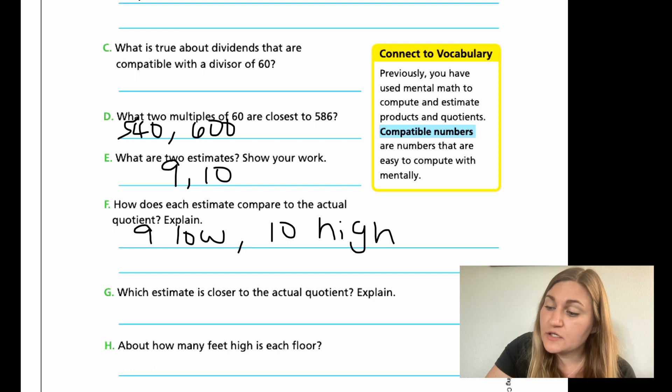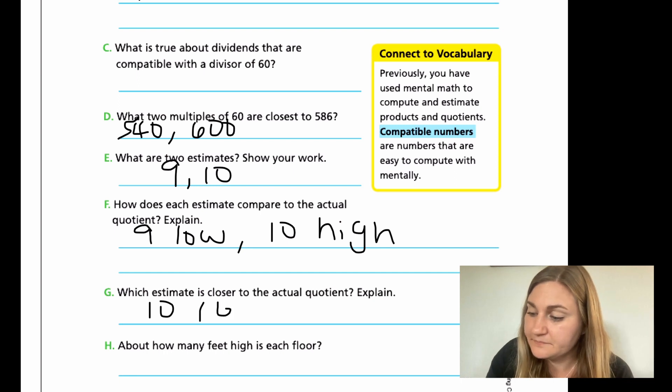G, which estimate is closer to the actual quotient? Well, on my estimate of 10, which was 600, going back up to D, or my 9, which was 540, which one is 586 closer to? Is it closer to 600 or 540? Well, it's closer to 600. So the estimate that's closer would be 10, because the 600 is closer.